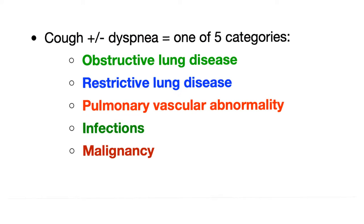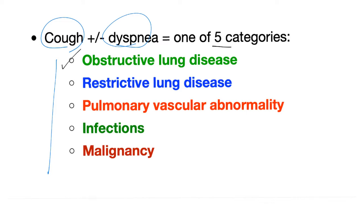How do you know if the patient's symptoms are related to the lung? Cough and dyspnea. And this gives you one of five probabilities or classes: 1. Obstructive lung disease. 2. Restrictive lung disease. 3. Pulmonary vascular abnormality. 4. Infections. 5. Malignancy.